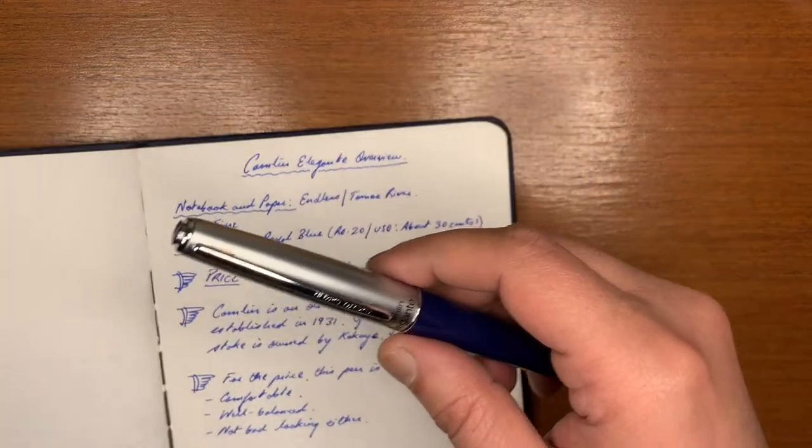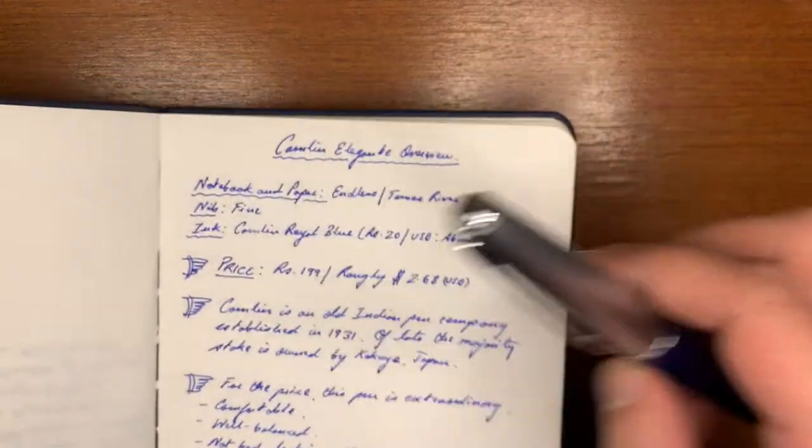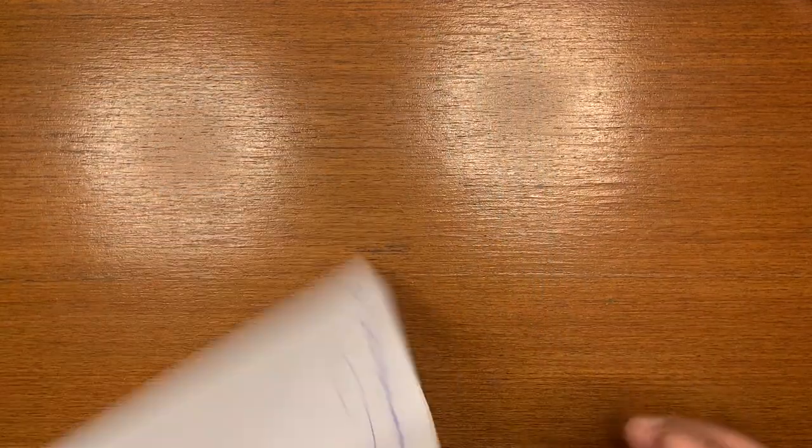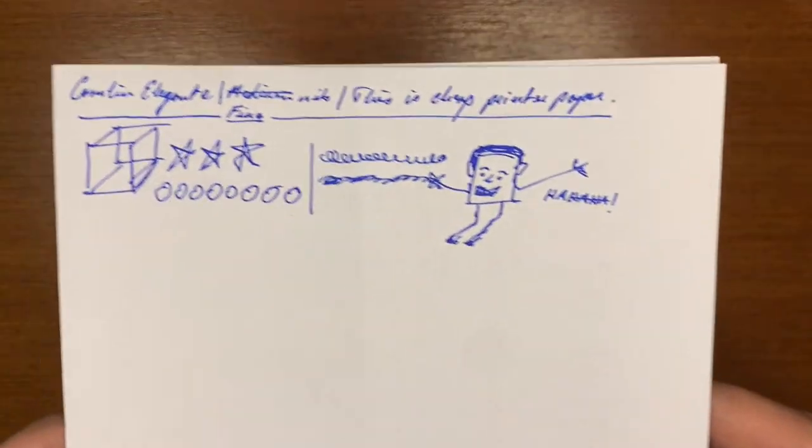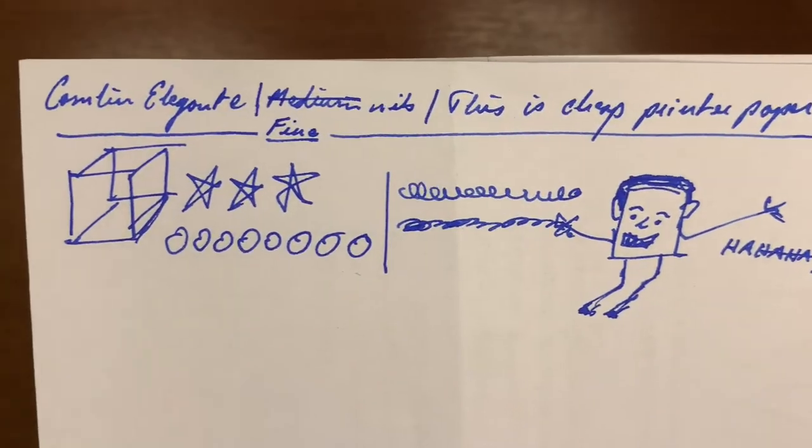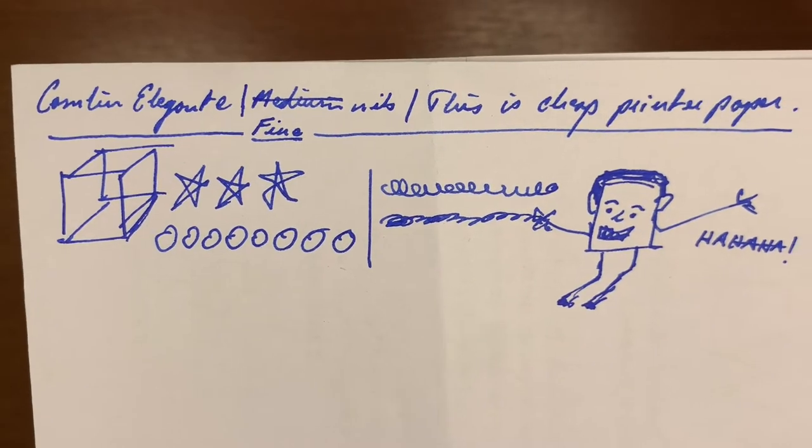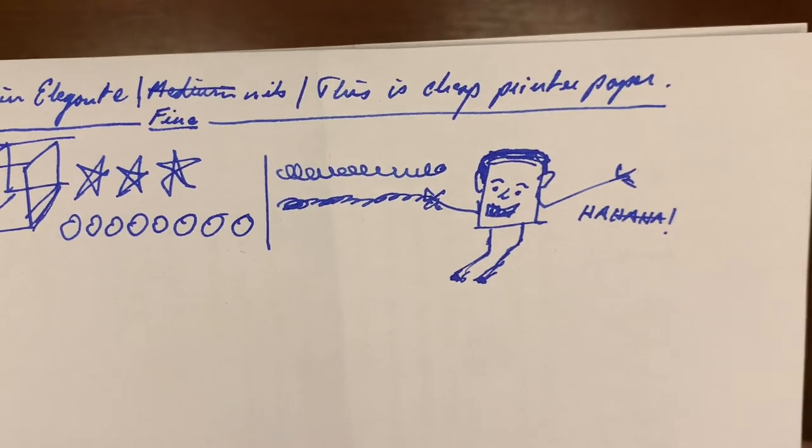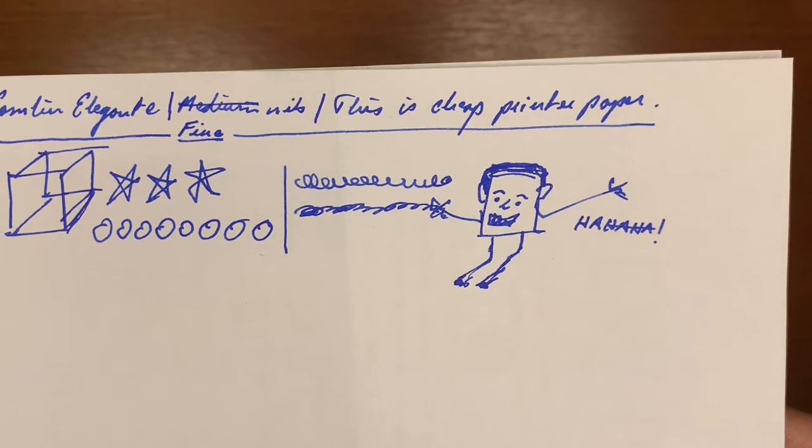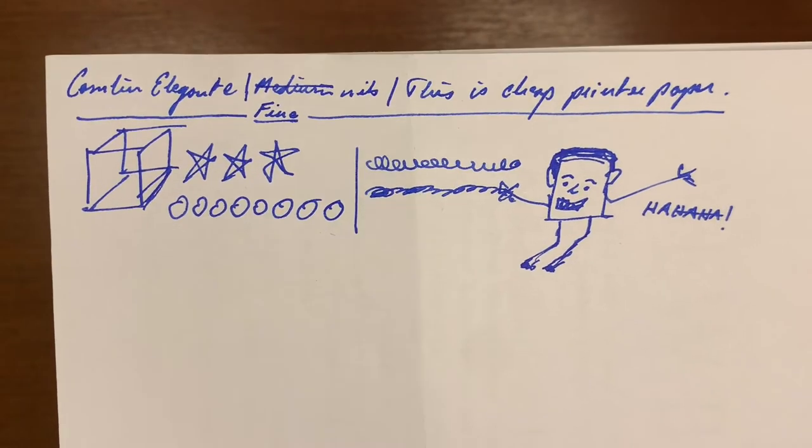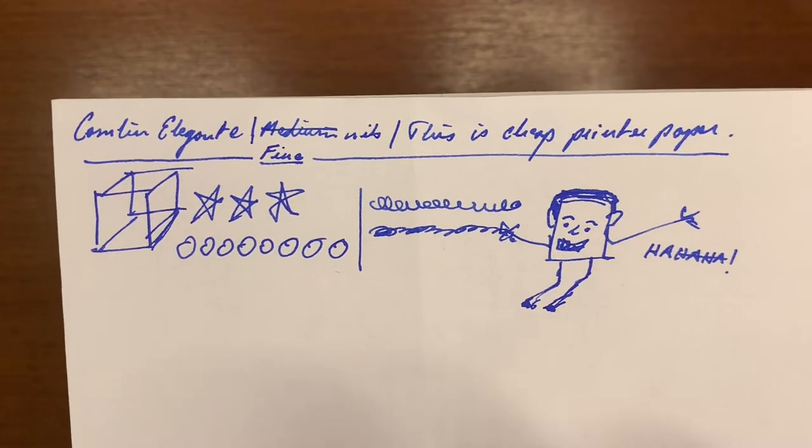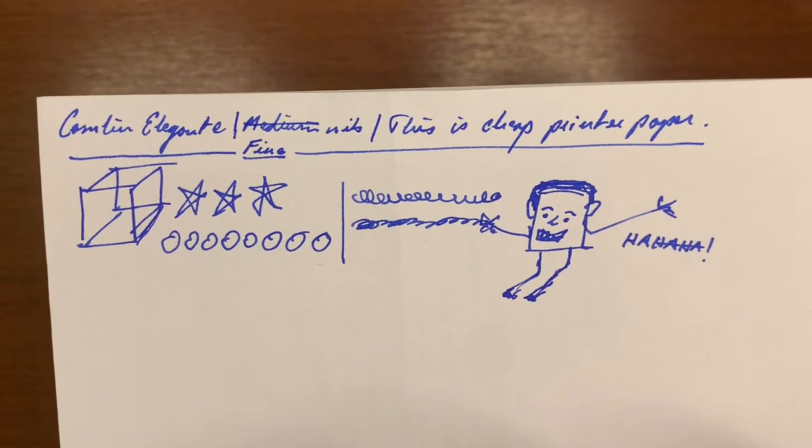Before I go I'm going to take a look at the writing sample on some cheap paper which is your regular printer paper. I've done some scribbling beforehand. So as you can see it's a very good performance. There is no feathering or anything of that sort. And the color is fairly consistent and I think that's got to do with the ink. This ink is pretty good.